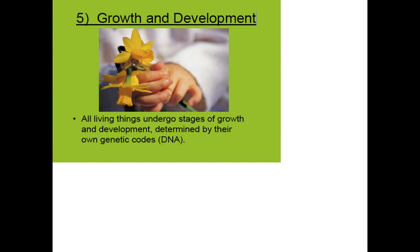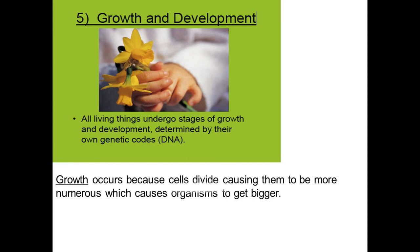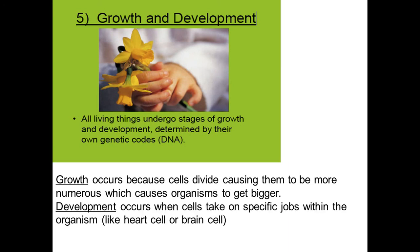The fifth characteristic of living things is growth and development. All living things undergo stages of growth and development as determined by their DNA. Growth occurs because cells divide, causing them to be more numerous, which causes the organism to get bigger — you are not the same size as when you were three years old because your cells divided and divided, making you have more cells. Development occurs when cells take on specific jobs within the organism, mostly when the embryo is forming before it's born. You start with one generic type of cell, and as cells continue to divide, they take on certain jobs based on their location — eye cells form for seeing, heart cells for pumping blood, and so on.